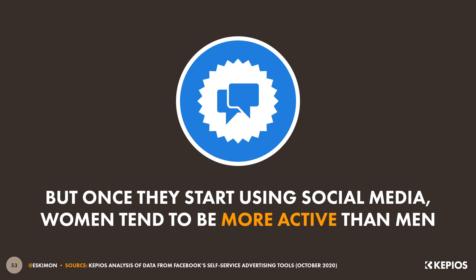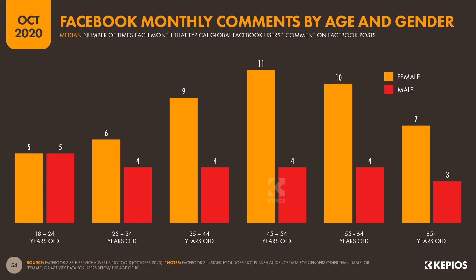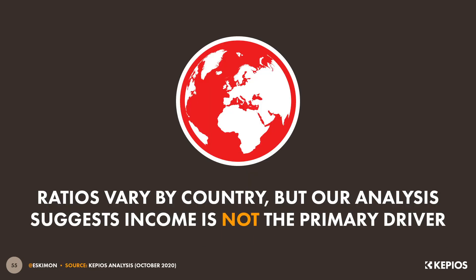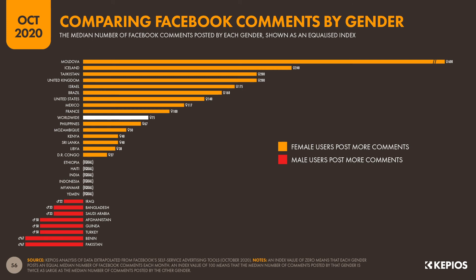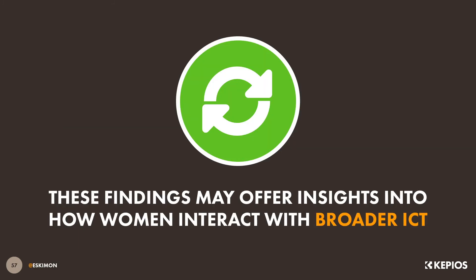However, the data also show that once women start using social media, they actually tend to be more active than men. For example, data from Facebook shows that women are almost twice as likely as men to post a comment, and in some age groups, women are almost three times as likely to comment as their male peers. Values do vary meaningfully by country — for example, the typical female Facebook user in Moldova leaves seven times as many comments as her male compatriot, but in Benin and Pakistan, men are significantly more likely to post comments than women. Even these limited findings may offer valuable insights into the likelihood that women will engage in other kinds of public online activity too.